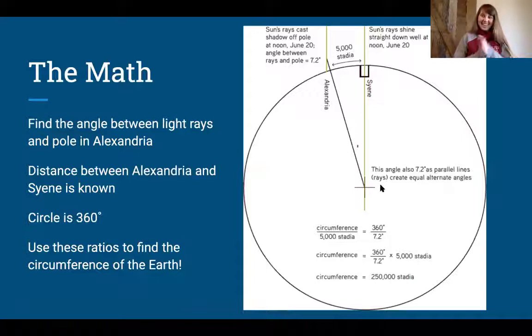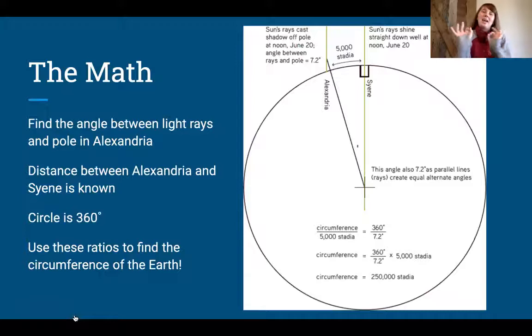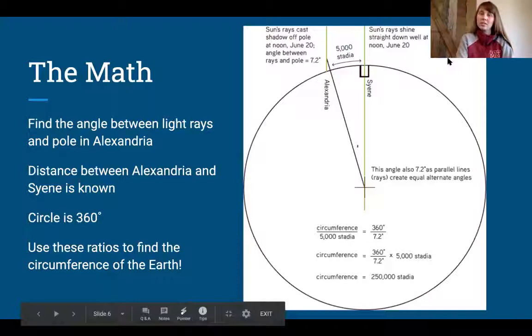This is kind of a lot to take in, but let's go through it step by step. The main data points that he took were the length of the pole and the length of the shadow. Through something called the law of sines, which for our purposes basically means that if you have a right triangle with two side lengths and an angle, you can find another angle. In this case, we can use the law of sines to calculate angle A—the angle between the light rays and the pole in Alexandria.